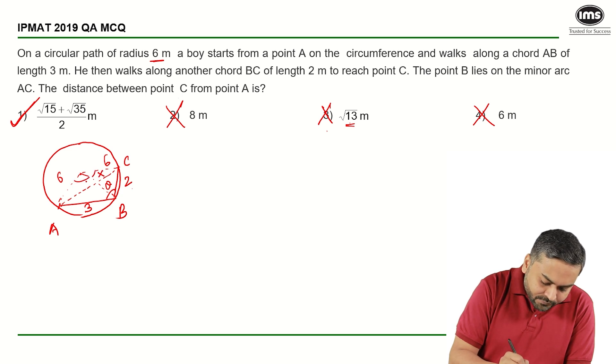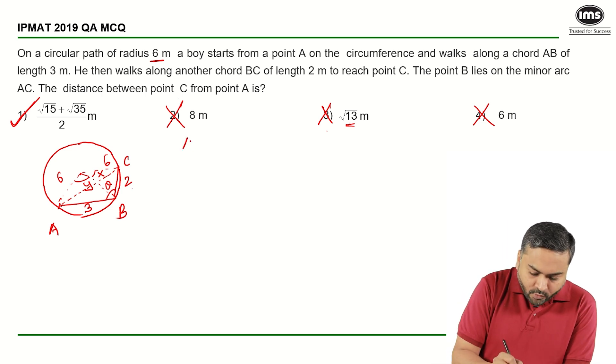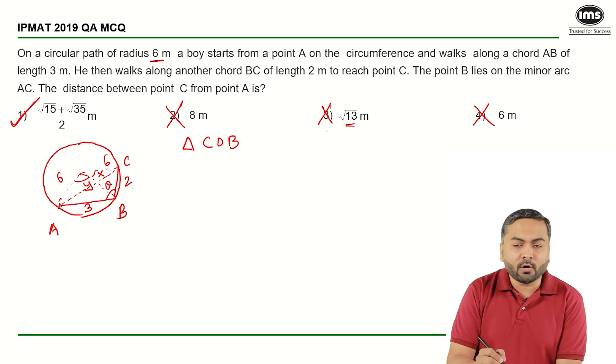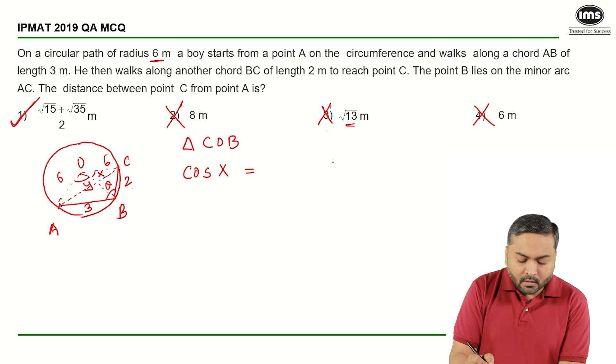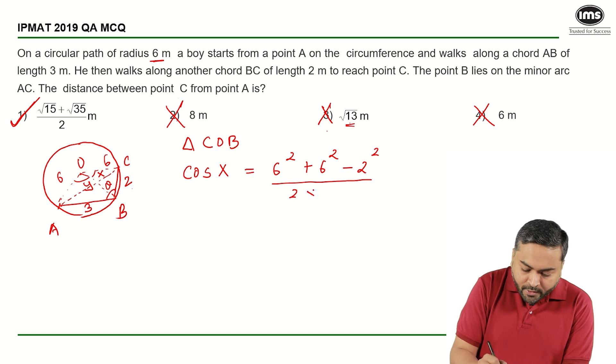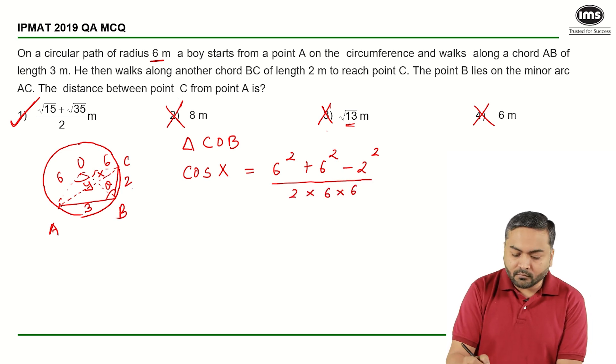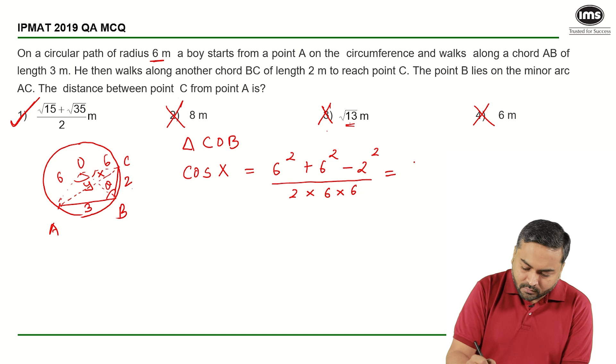Now if I apply cosine rule in triangle COB, if I apply cosine rule in triangle COB, let's say this is O. So what do I get here? Cos of x is equal to - so OB and OC both are radius, that's equal to 6 - so I have 6 square plus 6 square minus 2 square upon 2 into 6 into 6 is what I get, and that is equal to basically 72 minus 4, 68 upon 72, so that is equal to 17 upon 18 is what I have.